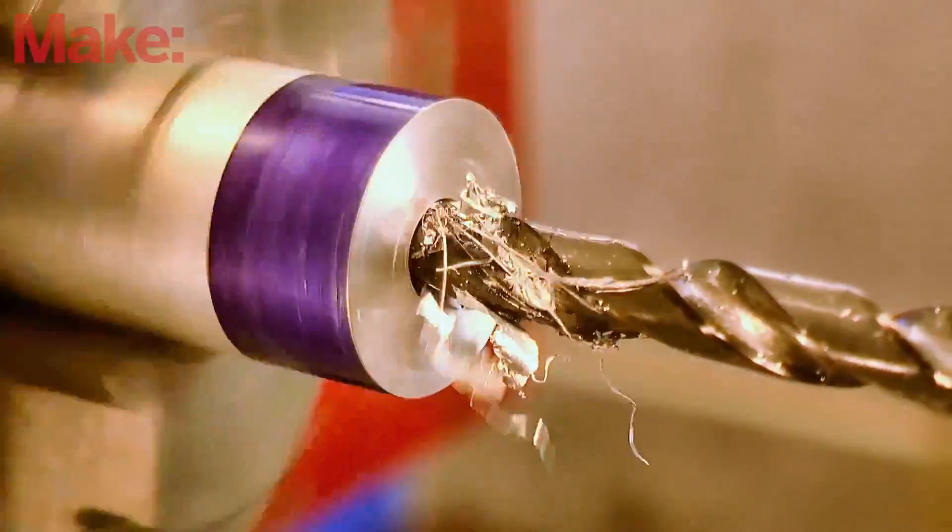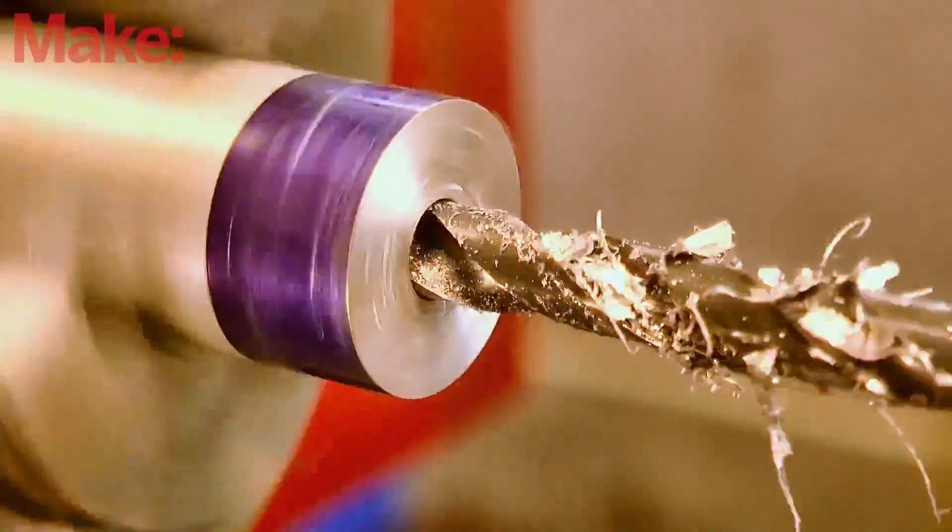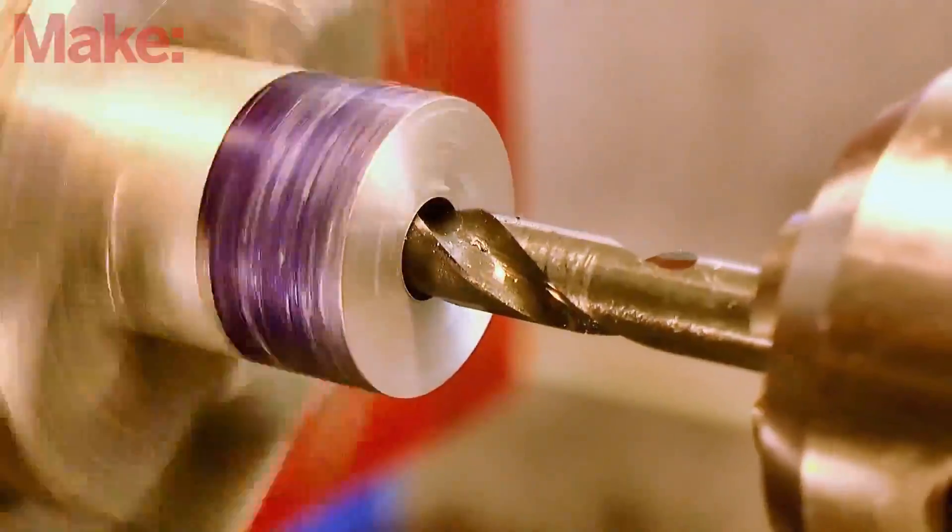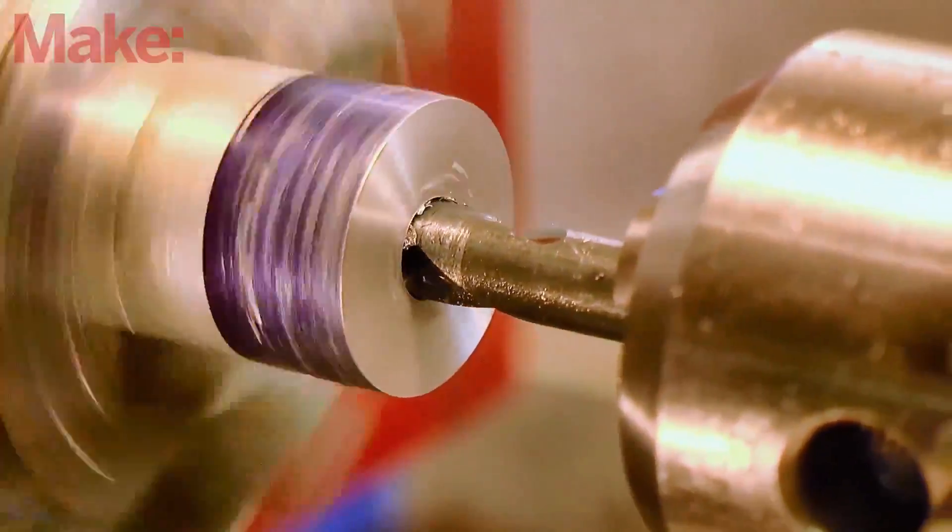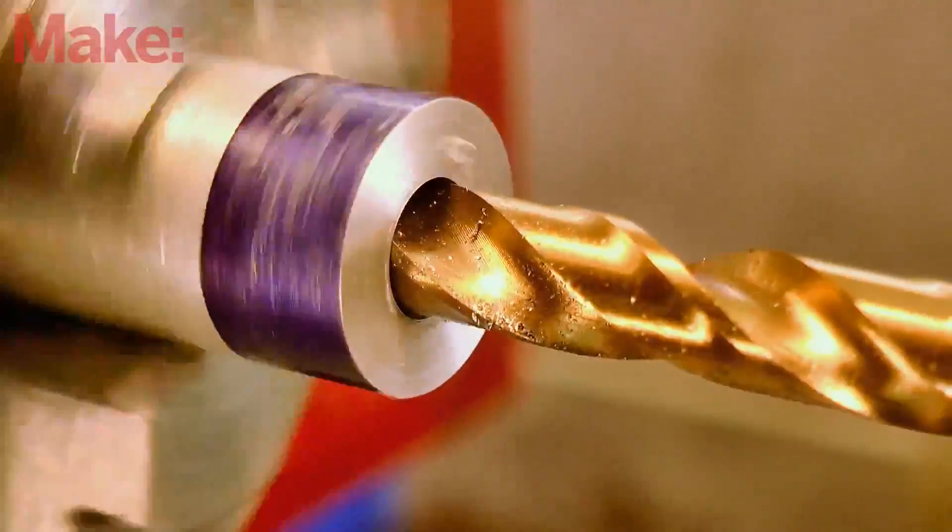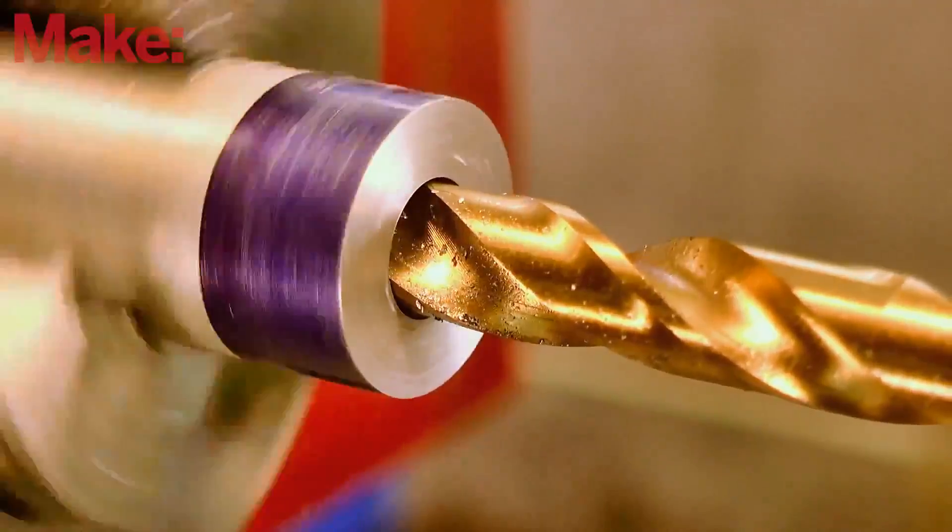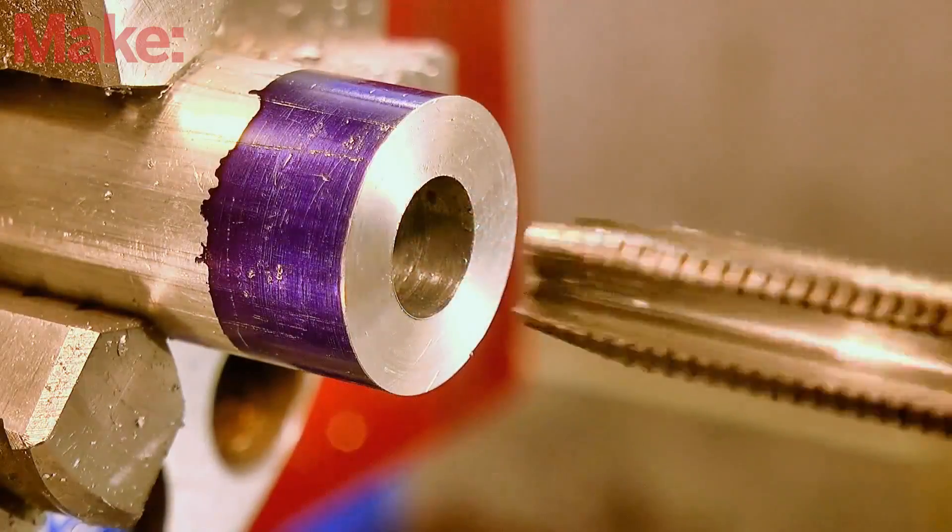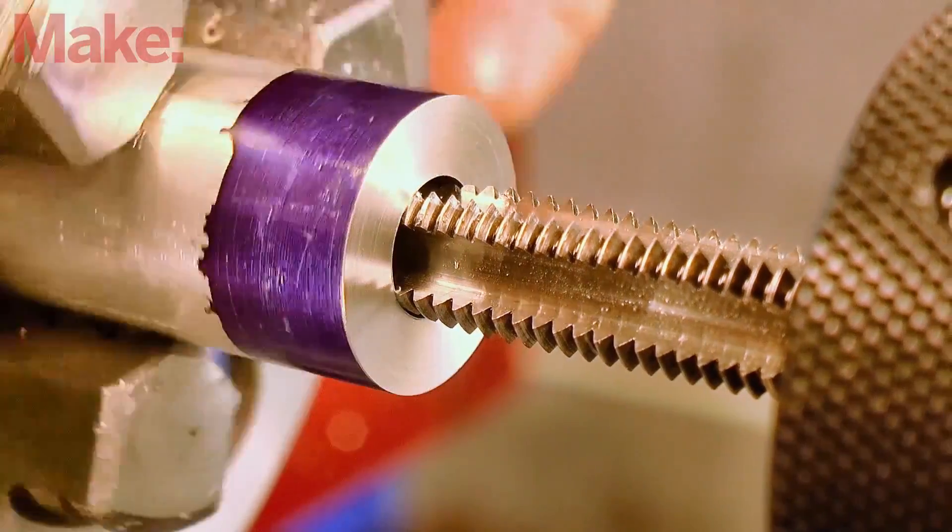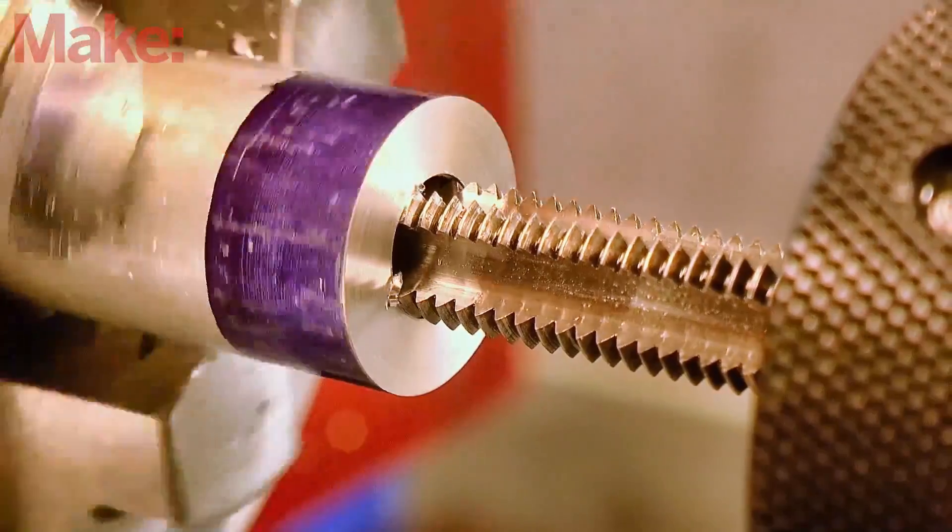Spot drill, and then drill the central bore to the tap drill size for the end cap thread. We only need a short section of this thread, so tap one end to a depth of about a half inch.